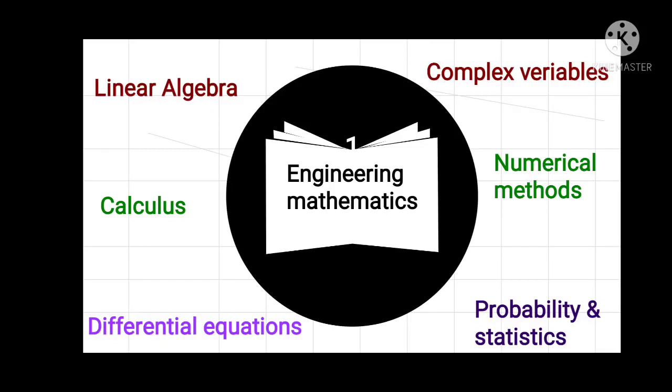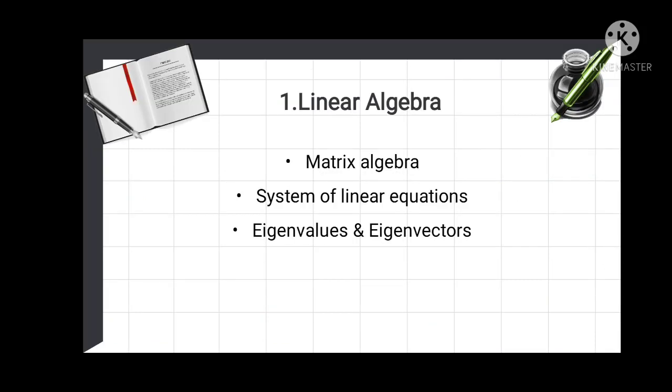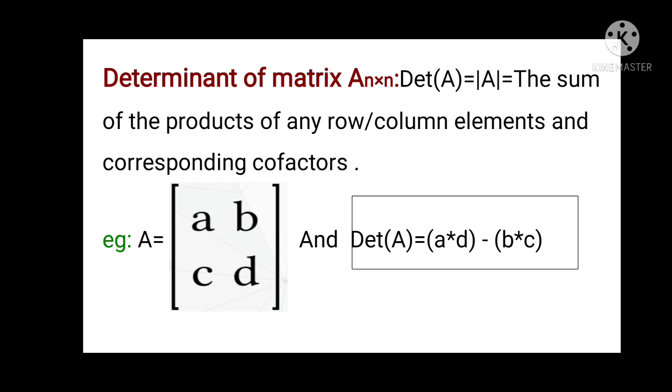Today I want to prove the determinant of a matrix. If you see the definition, det(A) equals the sum of the product of any row or column elements and corresponding cofactors. That det(A) equals AD minus BC.